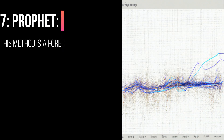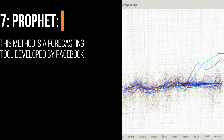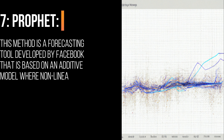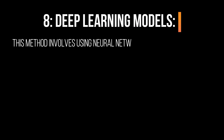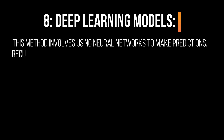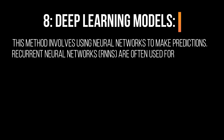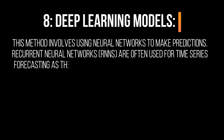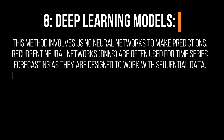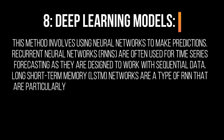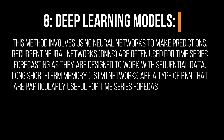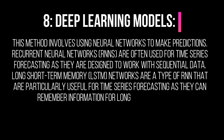7. Prophet: This method is a forecasting tool developed by Facebook that is based on an additive model where non-linear trends are fit with yearly, weekly, and daily seasonality, plus holiday effects. 8. Deep Learning Models: This method involves using neural networks to make predictions. Recurrent neural networks (RNNs) are often used for time series forecasting as they are designed to work with sequential data. Long short-term memory (LSTM) networks are a type of RNN that are particularly useful for time series forecasting as they can remember information for longer periods of time.